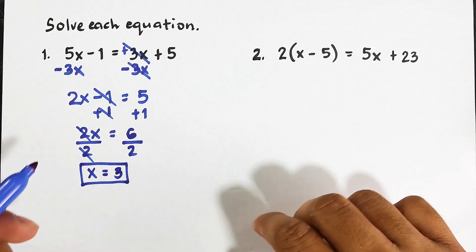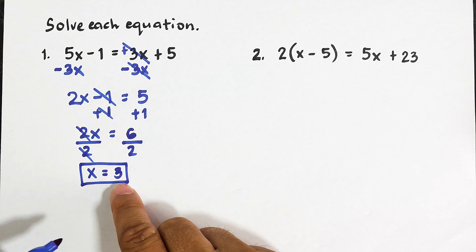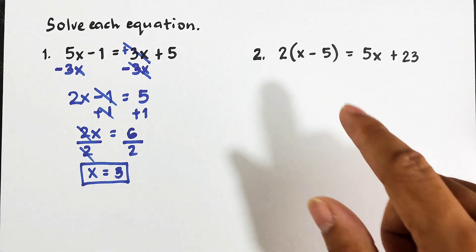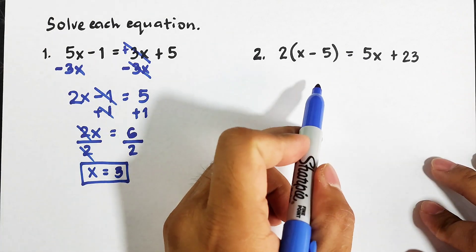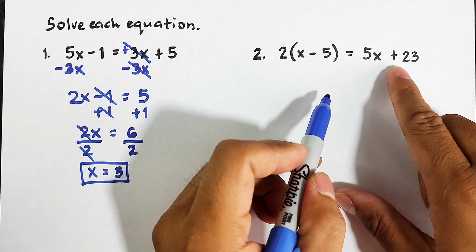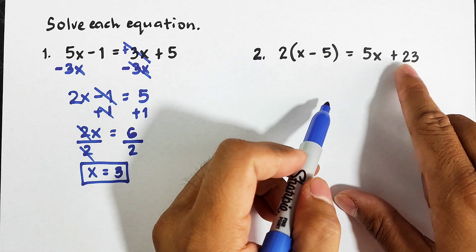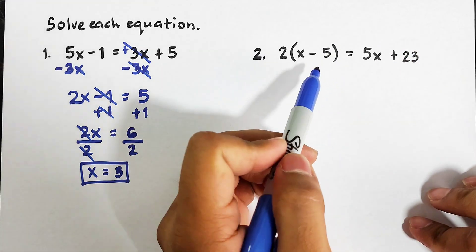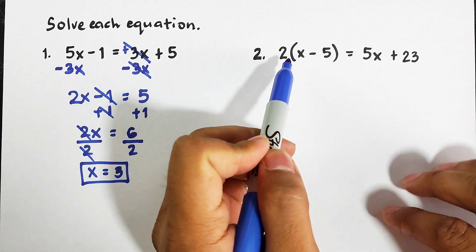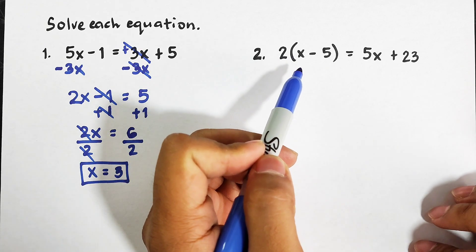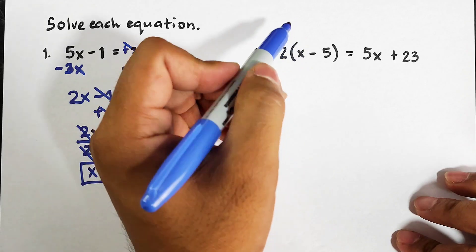Now guys, if you want to check whether your answer is correct, you can do the checking by simply using the original equation and substitute the variable x, which is 3. Now let's move on with item number 2. For number 2, we are given 2(x - 5) = 5x + 23. Now the problem here is that we have a grouping symbol, so basically we need to eliminate this by using distributive property.